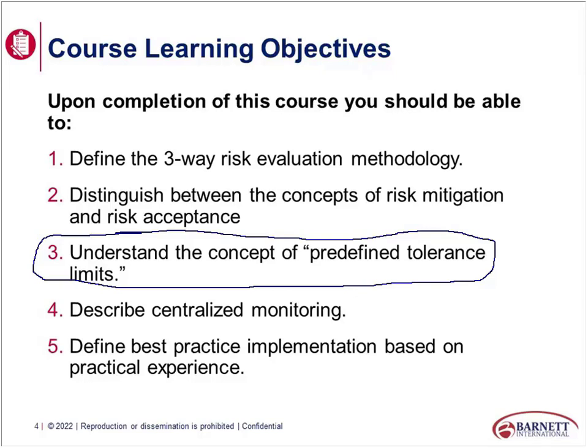We still have to be flexible because things change and things happen we didn't expect. But basically, the concept is a tolerance limit is the thing that cannot go wrong — that this will impact our results, this could impact safety. By predefining it, this is our red zone. We cannot get to our red zone. So what are our warning signs before we approach this is really what it's all about.